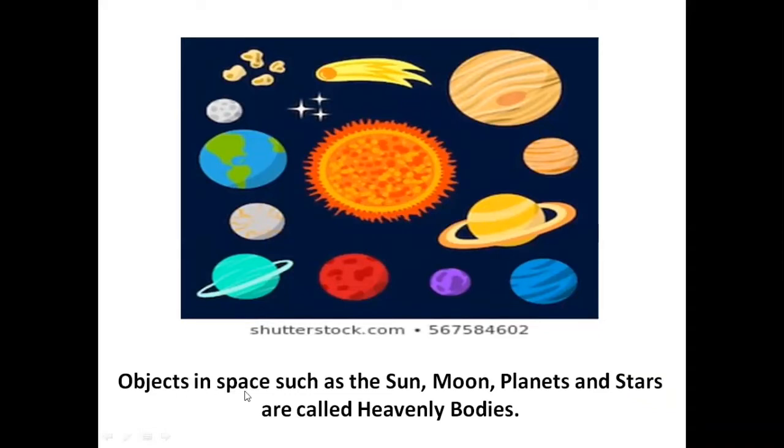Objects in space such as the sun, moon, planets and stars are called heavenly bodies. Children, when we look up at the sky we see sun, moon, stars and there are so many planets in the space. Together they all are called heavenly bodies. So repeat after me.